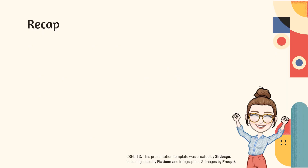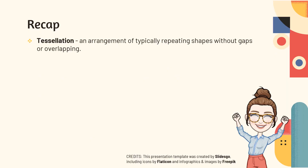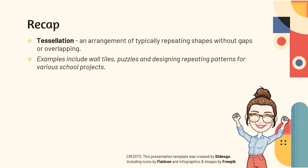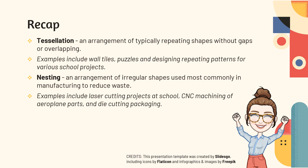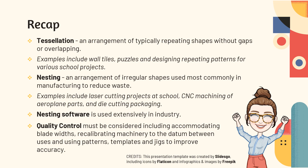Well done today, guys. Let's go through the recap. Today you have learned about tessellation — an arrangement of typically repeating shapes without gaps or overlaps — with examples including wall tiles, puzzles, and designing repeating patterns for school projects like stationery. Nesting is an arrangement of irregular shapes used most commonly in manufacturing to reduce waste, with examples including laser cutting at school, CNC machining of aeroplane parts, and die cutting packaging. Nesting software is used extensively in industry. Quality control must be considered, including accommodating for blade width, recalibrating machinery to the datum between uses, and using patterns, templates, and jigs to improve accuracy. Great job today, guys — see you in class. Bye.